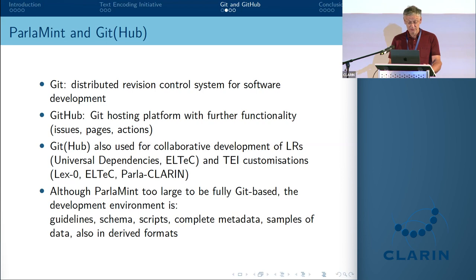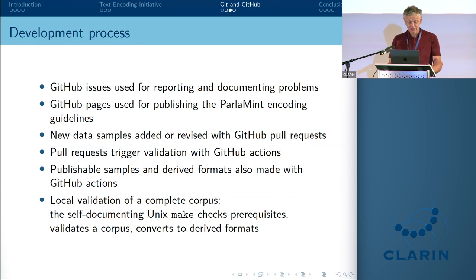The development process is very much Git-based. In Parliament Two, only GitHub issues are used for reporting and documenting problems, since there are too many partners for email — and unlike email, answers are documented so you can point someone to an issue rather than answering the same question repeatedly. GitHub Pages are used for publishing documentation including the ParlaMint encoding guidelines. New data samples are submitted via GitHub pull requests, with automatic validation triggering immediately so submitters see problems right away. GitHub Actions publish official samples in derived formats.